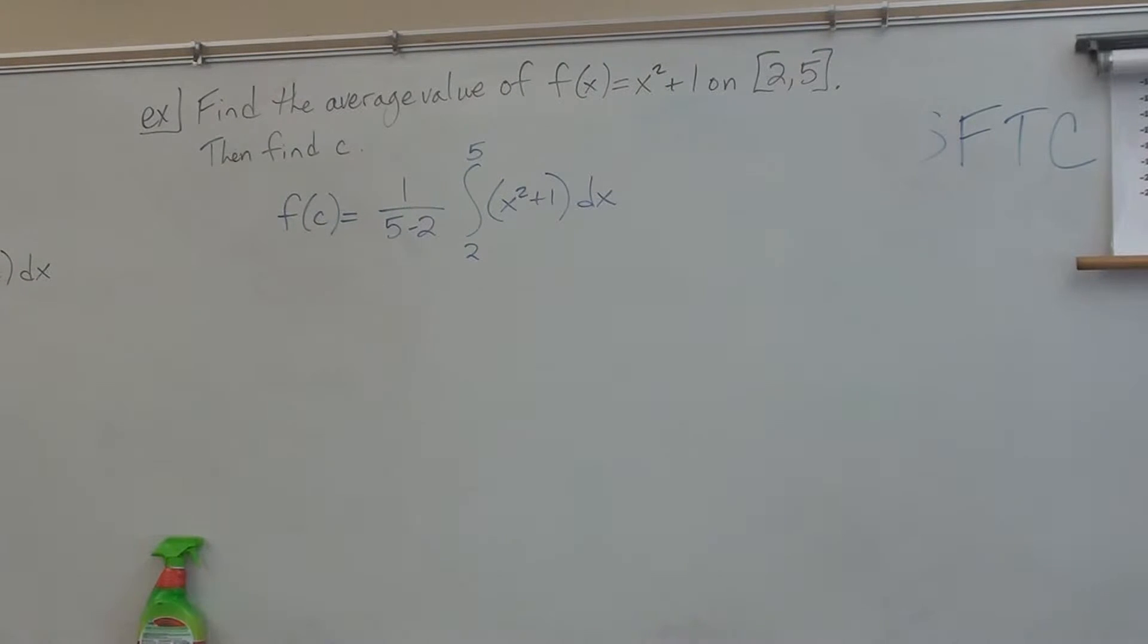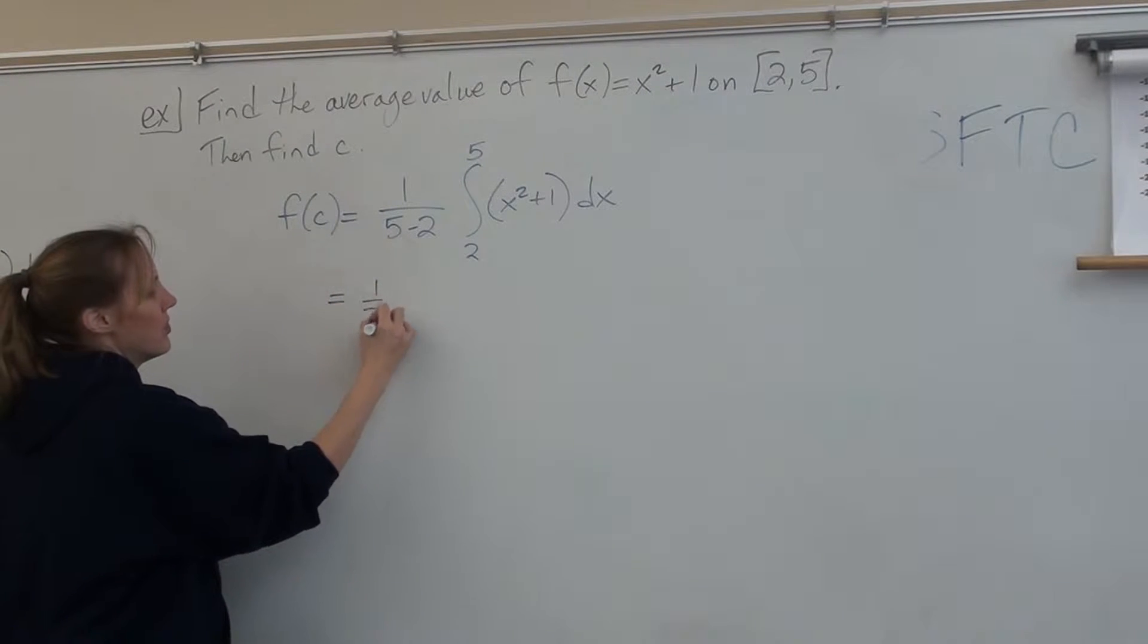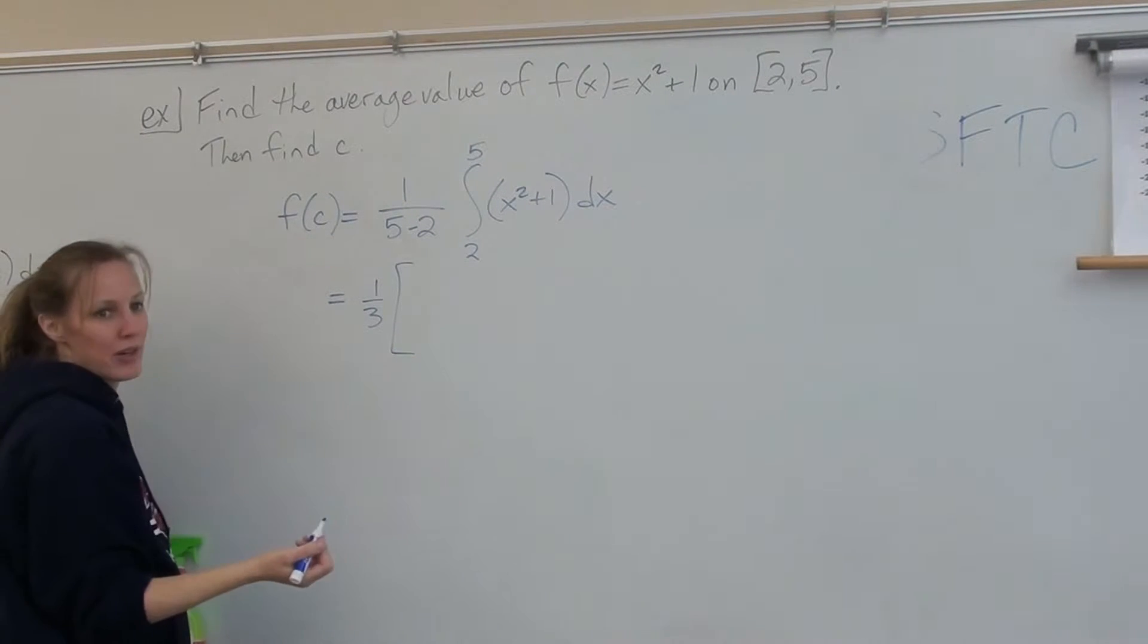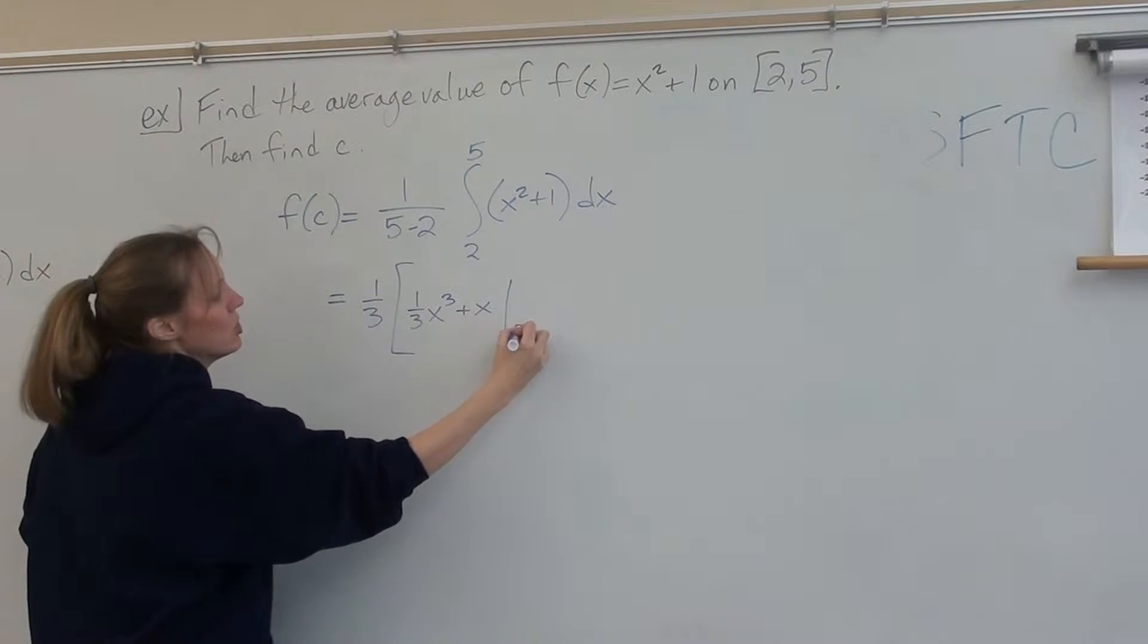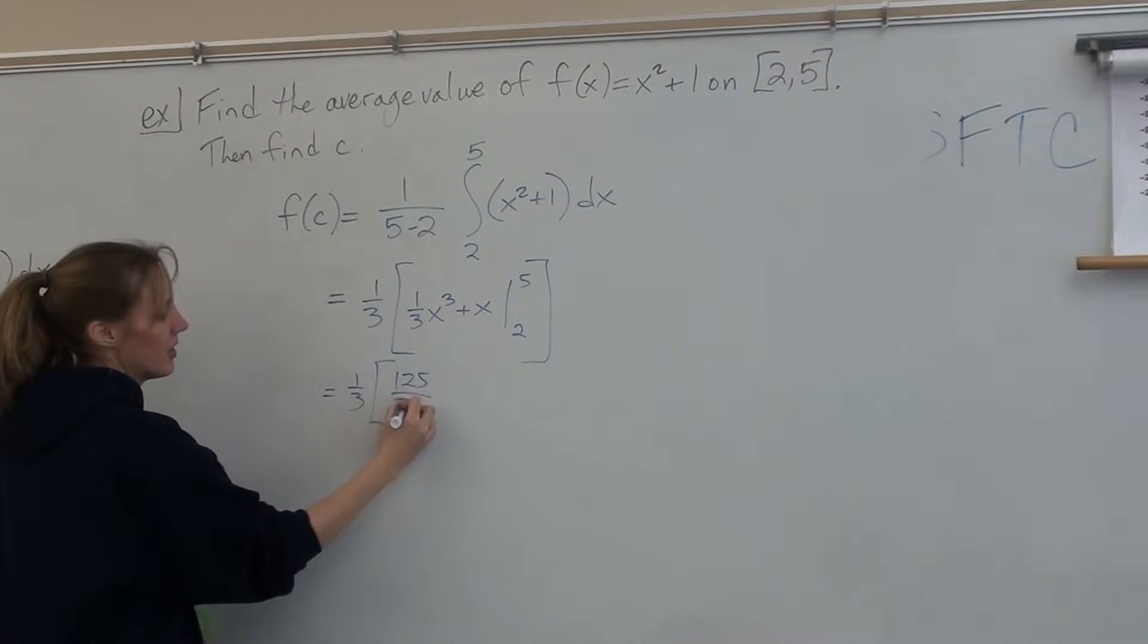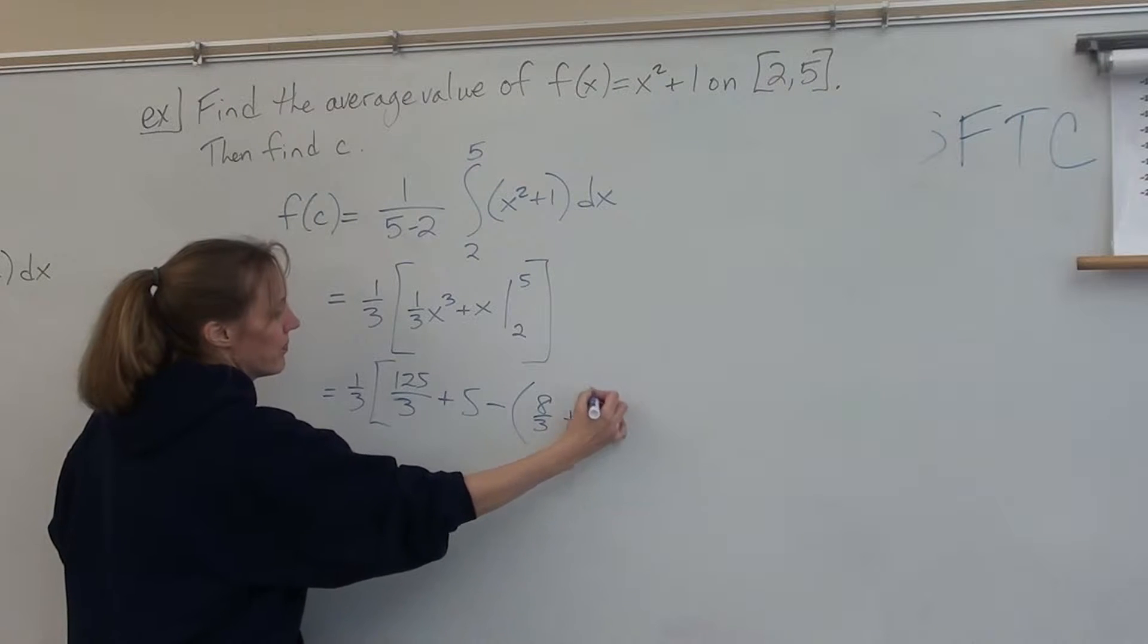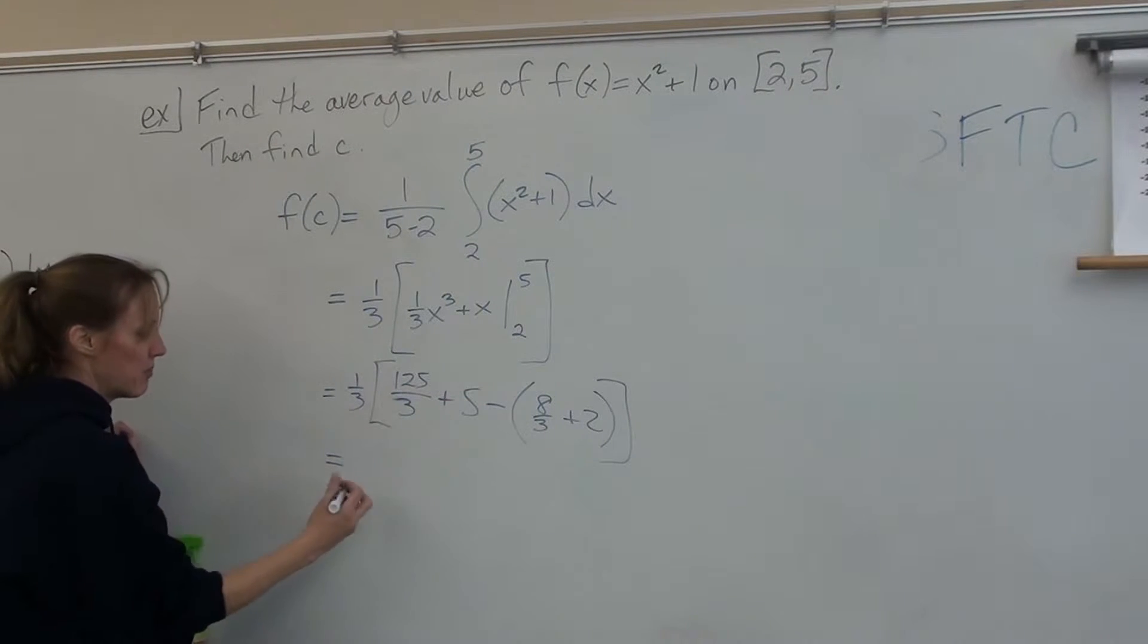How did you do with your setup? Any questions on that? Did you all get the dx? Yes. Good. Alright, when I am doing these problems, I keep this width, I keep it out front. You don't have to, you can multiply it into your function, but I just keep it out front and multiply it at the end. So here we go, we have 1 third x cubed plus x from 2 to 5, so we end up with 1 third times 125 thirds plus 5 minus 8 thirds plus 2.